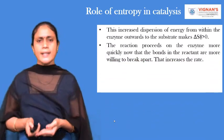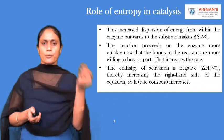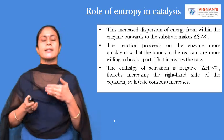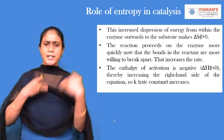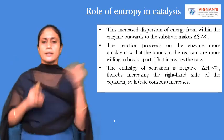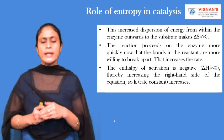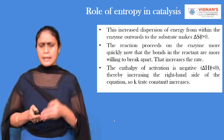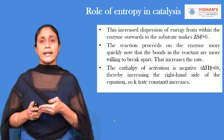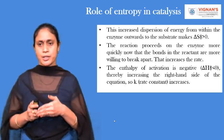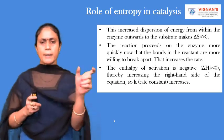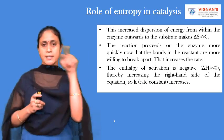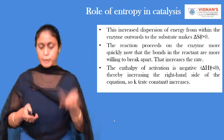This increased dispersion of energy within the enzyme towards the substrate makes delta S greater than zero. The reaction proceeds on the enzyme more quickly now that the bonds in the reactants are more willing to break, increasing the rate of the reaction. The enthalpy of activation is negative — delta H is less than zero — thereby increasing the right-hand side of the equation, and the rate constant, represented by small k, will be increasing.